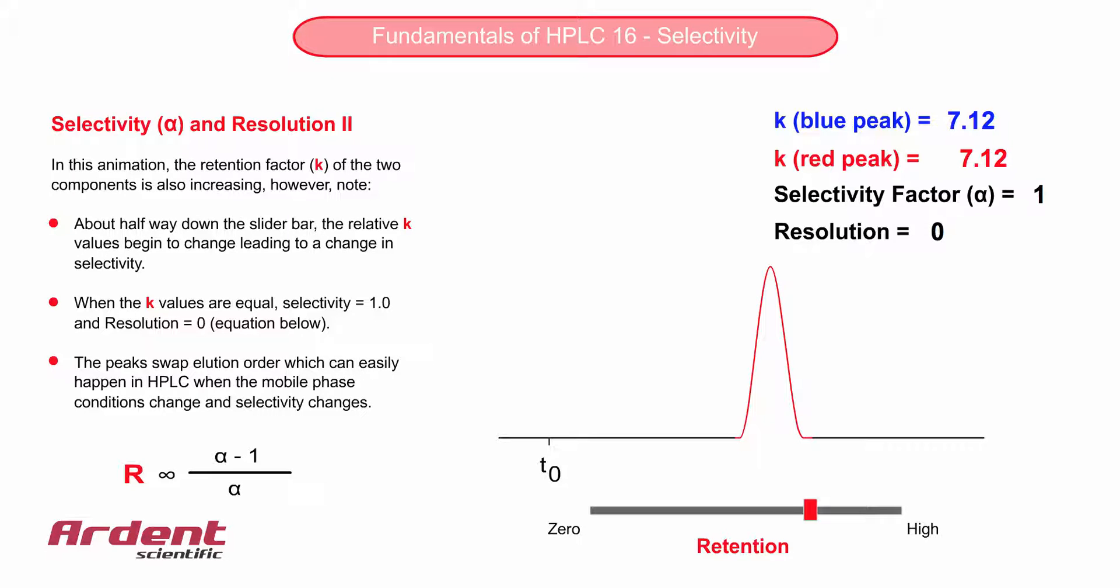There are two main ways to change selectivity in HPLC, by changing the type of stationary phase or by changing the nature of the mobile phase. A third option is temperature of the separation, and this can also change selectivity.